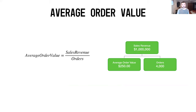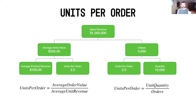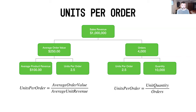Just as a refresher: average order value is your sales revenue divided by your orders. In this scenario you took your million dollars of revenue divided by 4,000 orders to get your $250 average order value. Then what you've got is units per order — basically there are two ways to calculate it. On the far right-hand side you can take your quantity divided by your orders: 10,000 divided by 4,000 gives you 2.5.